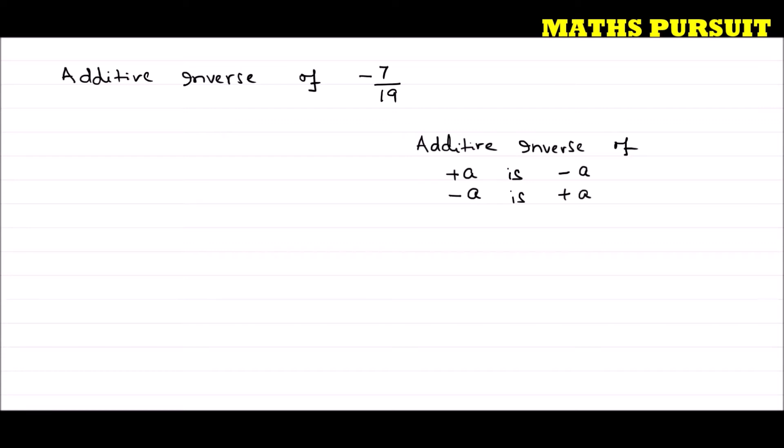So when we add these two things together, when we add the inverse and the original number, we should get zero. The additive inverse of a number and the original number, if we add them, we should get zero.